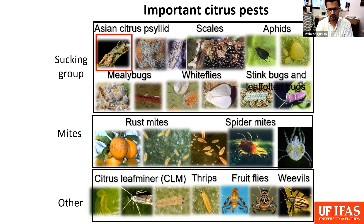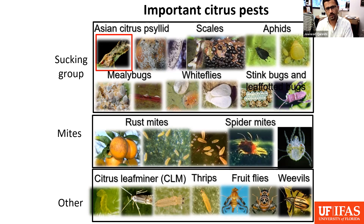Citrus leafminer is another pest which is spread almost throughout the state, and it is associated with another disease called citrus canker. Then we have other pests such as thrips, fruit flies, and weevils. Some of them could be region-specific or field-specific, but not as widespread as the Asian citrus psyllid and Huanglongbing.